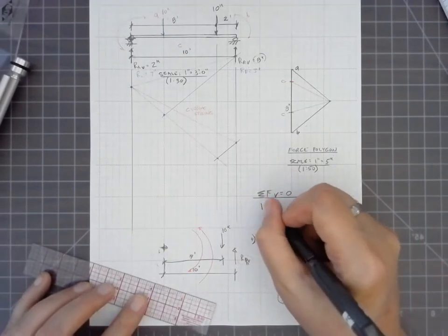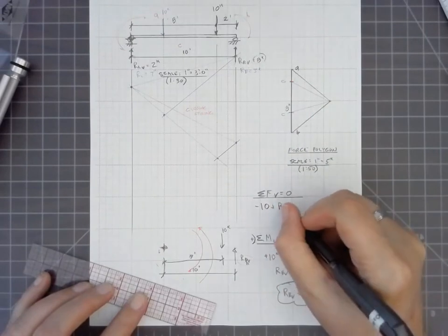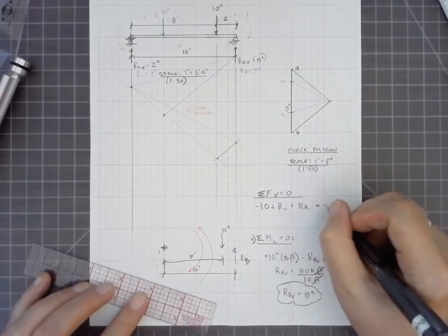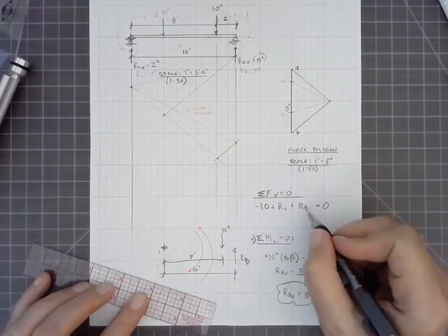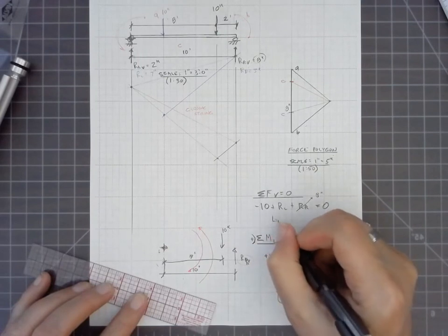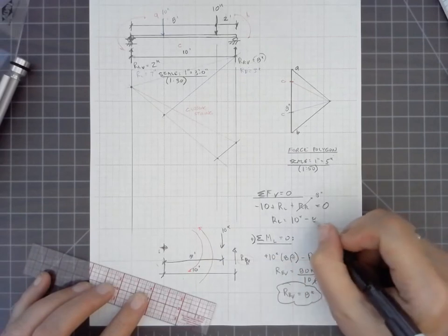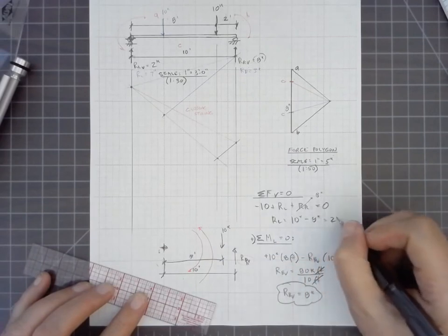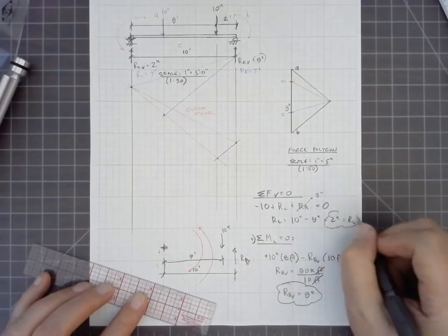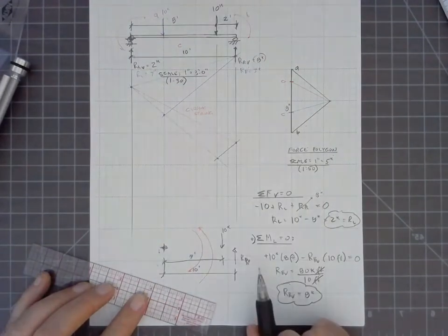So then we find out the last reaction. The 8 kips is simply taking the balance by sum of the forces vertical equal to 0. So negative 10 kips because it's going downward, plus R left plus R right equals 0. We've already calculated R right is 8 kips, so R left is 10 kips minus 8 kips or 2 kips. So that confirms the graphics that we did previously.